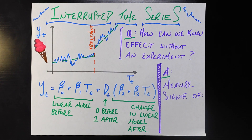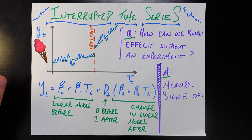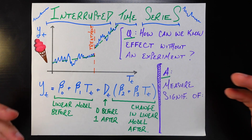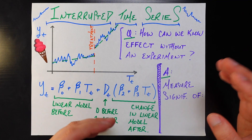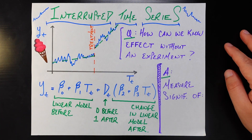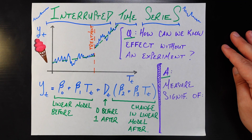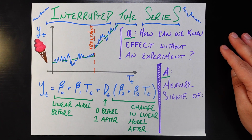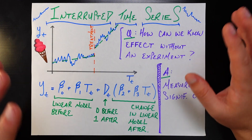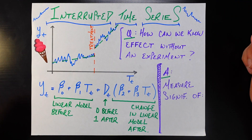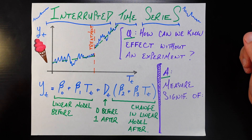Interrupted time series is specifically a type of non-experimental technique you can use when the data you're dealing with is time series data. You go ahead and do some kind of intervention or treatment — in this case, the advertising at the library — and you look at what happened before the treatment and after the treatment. Then you fit some kind of model to understand the effect of your change from the before to the after period. Let's get into what that model actually looks like.